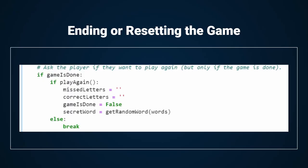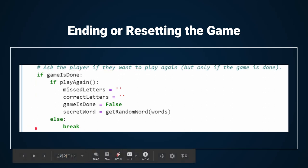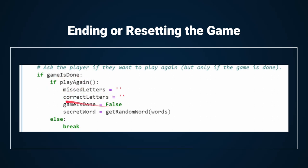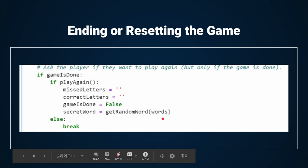To end or reset the game, the play_again function is used. We ask the player if they want to play again, but only if the game is done. If the player does want to play again, the values in missed_letters and correct_letters must be reset to blank strings, gameIsDone reset to False, and a new secret word stored in secret_word. When execution loops back to the beginning of the while loop, the board resets to a fresh game. The break statement causes execution to jump to the first instruction after the loop — and because there are no more instructions, the program terminates.